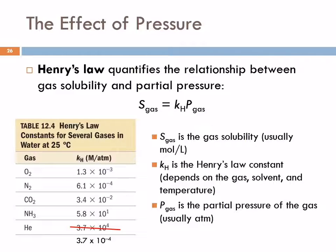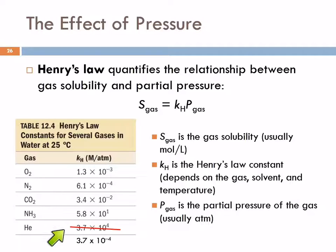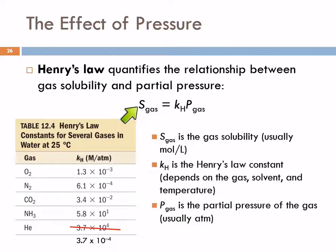Henry's law quantifies the relationship between gas solubility and the partial pressure of the particular gas — it's the partial pressure of the individual gas that increases the solubility; the pressure of the other gases doesn't matter. Here's a table from the textbook of Henry's law constants — note there's an error for helium: the constant for helium is 3.7 × 10⁻⁴, not +4. Henry's law states that the solubility of a gas equals Henry's law constant times the partial pressure of that particular gas.